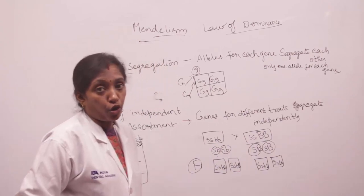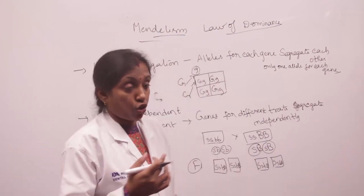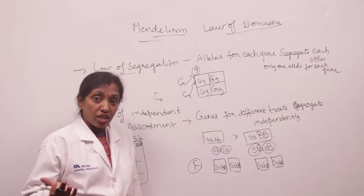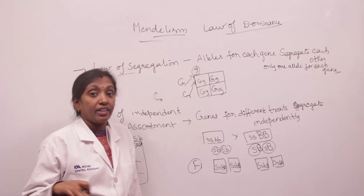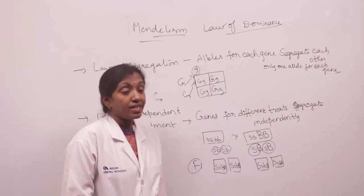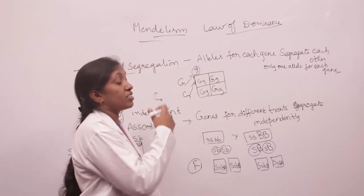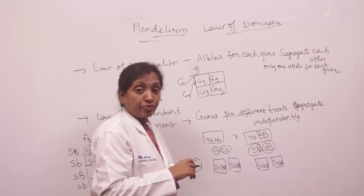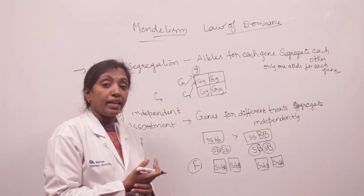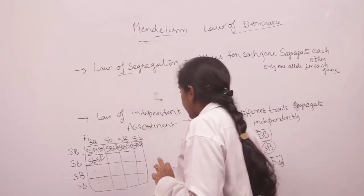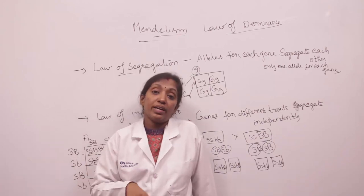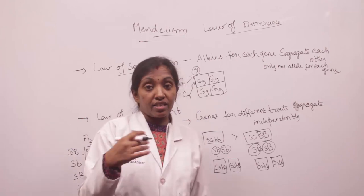The law of dominance states that some genes are dominant and some are recessive. The dominant allele will definitely show its effect in its dominant trait. Dominant genes will show their dominant effect in future generations. The law of segregation means alleles for each gene segregate during gamete fusion so each gamete has only one allele per gene. The law of independent assortment means genes for different traits segregate independently. The law of dominance means dominant genes will definitely show their dominant effect in future generations.